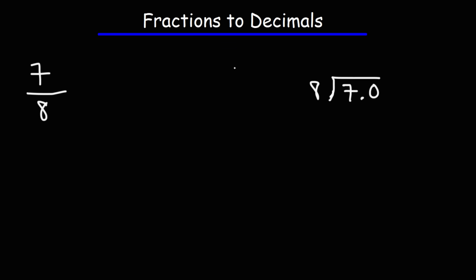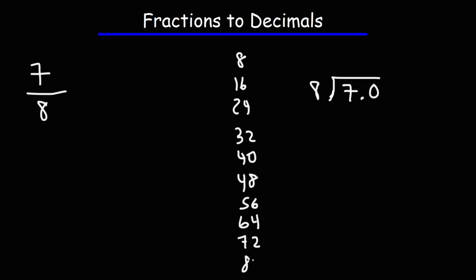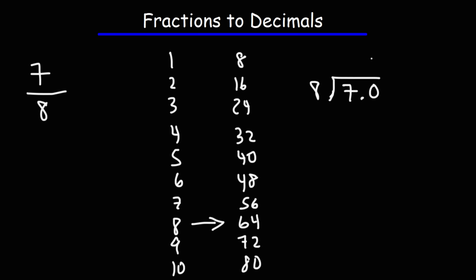Let's write all the multiples of 8: 8, 16, 24, 32, 40, 48, 56, 64, 72, 80. The highest multiple of 8 just under 70 is 64. 8 times 8 is 64, so 8 goes into 70 eight times. 8 times 8 is 64. Let's add the decimal and make sure it's lined up. 70 minus 64 is 6.